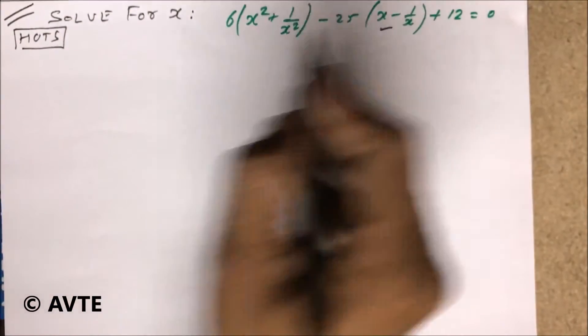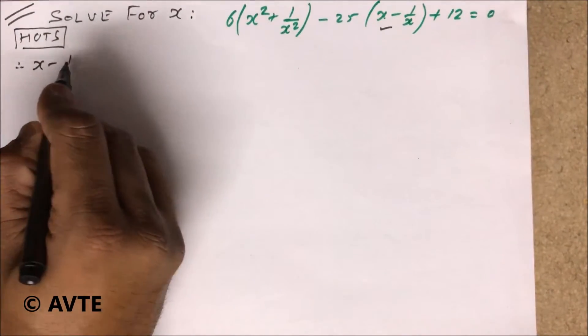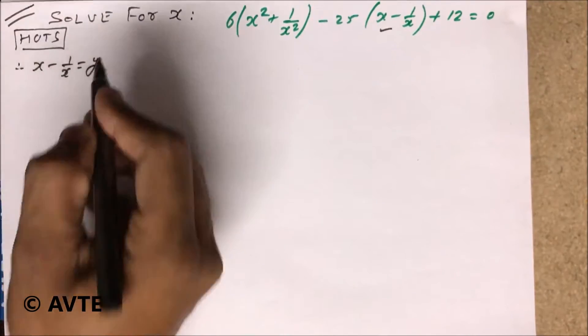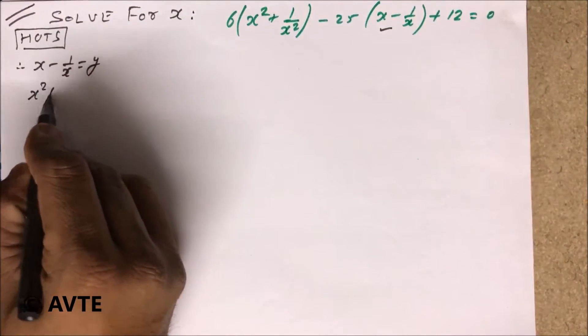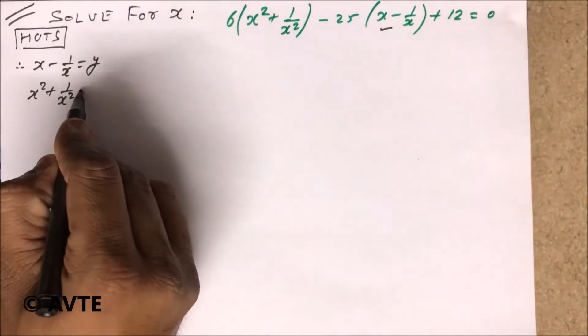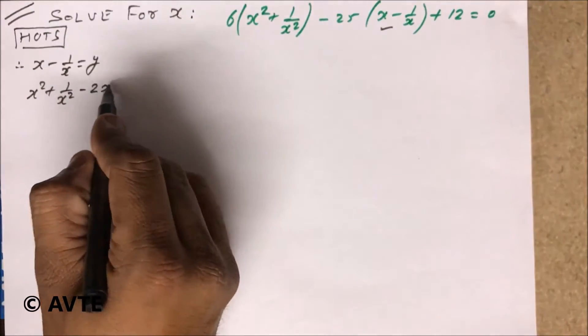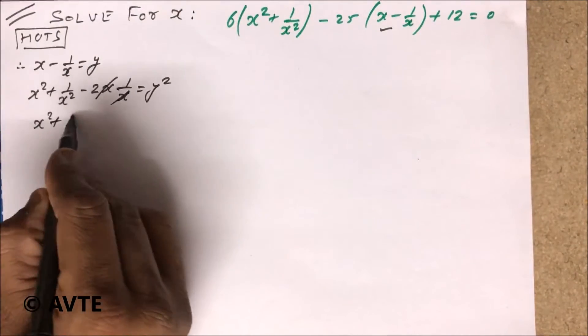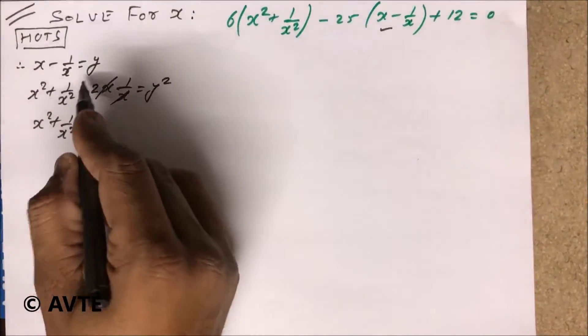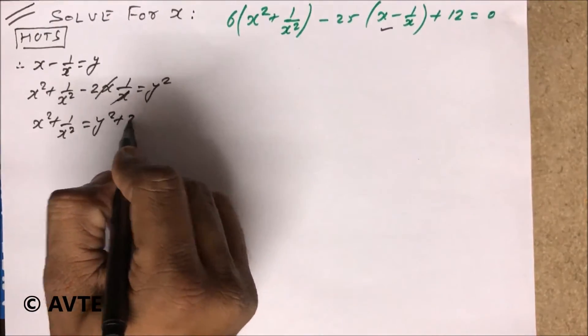Here we just put x minus 1 by x is equal to y. So squaring both sides, this is x square plus 1 by x square minus 2 times 1 by x is equal to y square. So we have x square plus 1 by x square is equal to y square plus 2.